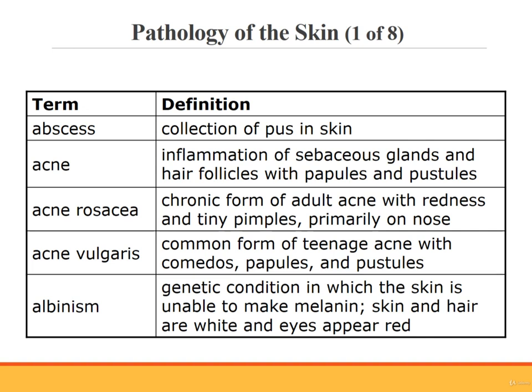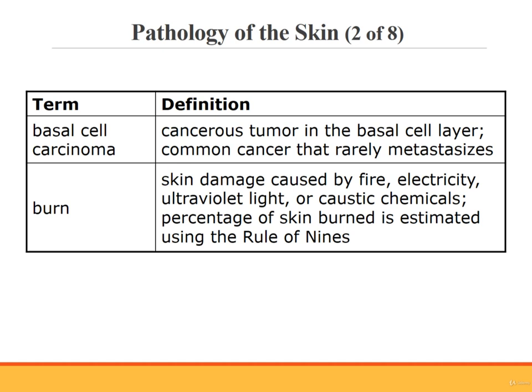Albinism is a genetic condition in which the body is unable to make any melanin. Milky white skin and hair characterize this condition, as do eyes that appear red or pink. Albinism can occur in any ethnicity. Basal cell carcinoma is a cancerous tumor that occurs in the basal cell layer of the epidermis. It is a frequent type of skin cancer that rarely spreads. These cancers often occur on sun-exposed skin. A burn is damage to the skin as a result of exposure to open fire, electricity, caustic chemicals, or ultraviolet light from the sun.